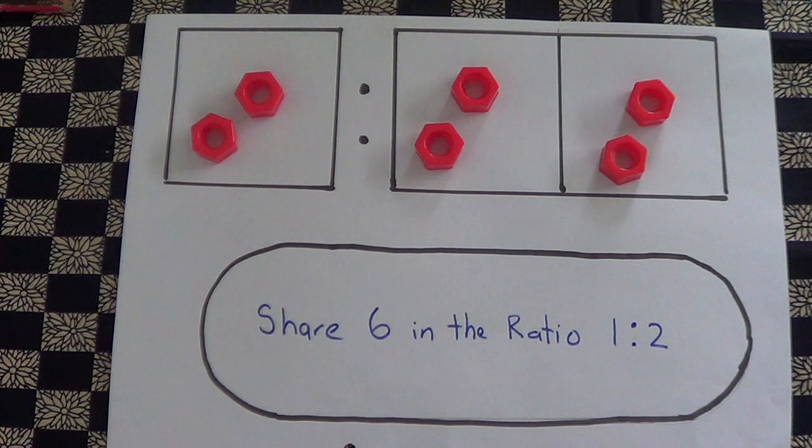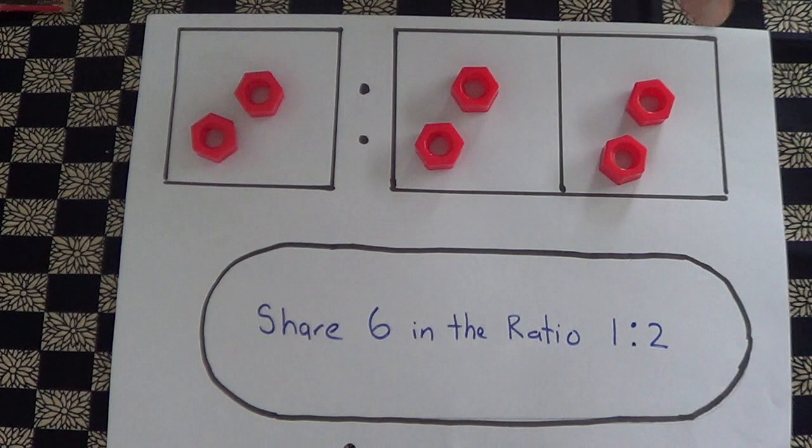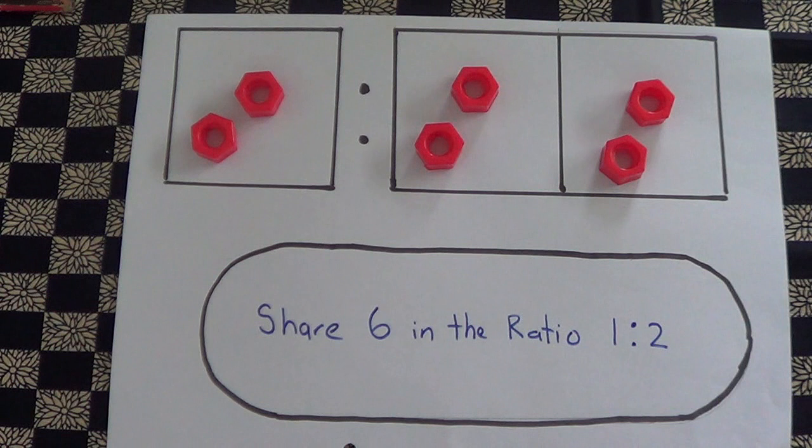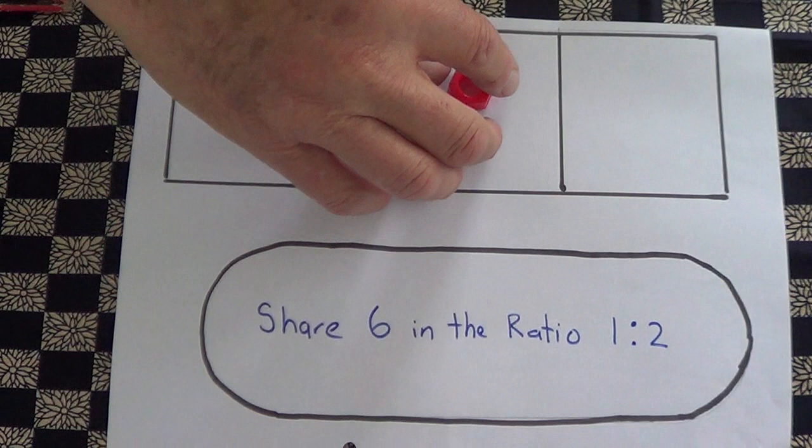When we share six in the ratio of 1:2, we get two here and a total of four over here. So the answer is 2:4. Now we'll do the next question.